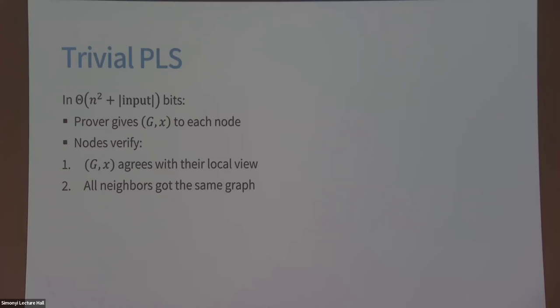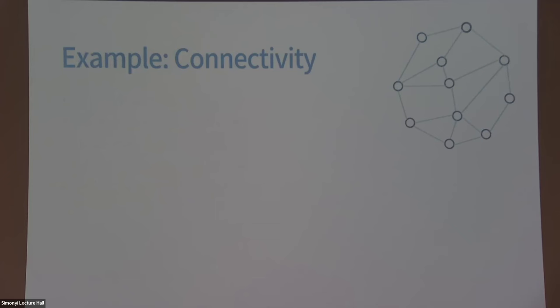There is an implicit assumption: we usually only consider connected graphs in this model, because if there is a partition, there's nothing we can do to detect it — that's common in distributed algorithms. I'll show one example where I talk about connectivity directly. If the network may not be connected, you need to know something more, like knowing the intended size n of the network.